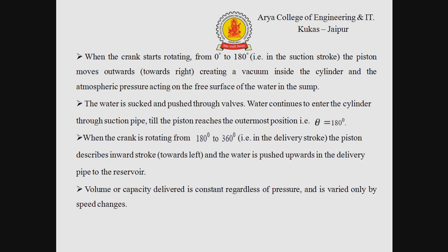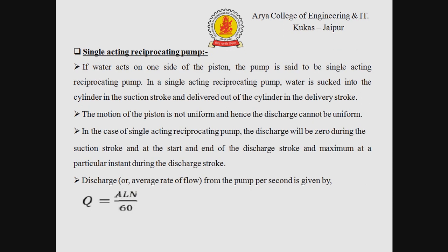When the crank starts rotating from 0 to 180 degrees, the piston moves outwards creating a vacuum inside the cylinder, and the atmospheric pressure acting on the free surface of the water in the sump causes water to be sucked and pushed through the valves. Water continues to enter the cylinder through the suction pipe until the piston reaches the outermost position at theta equals 180 degrees. When the crank rotates from 180 to 360 degrees, the piston describes an inward stroke and the water is pushed upwards through the delivery pipe to the reservoir. Volume delivered is constant regardless of pressure and varies only with speed changes.